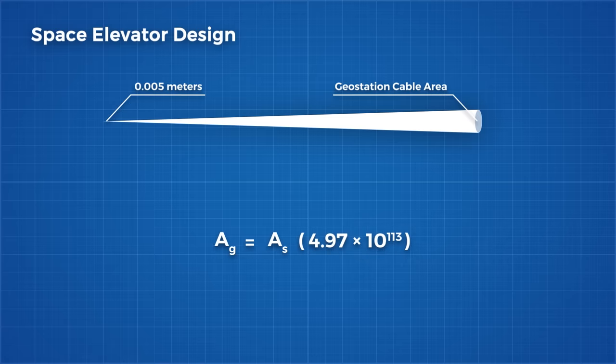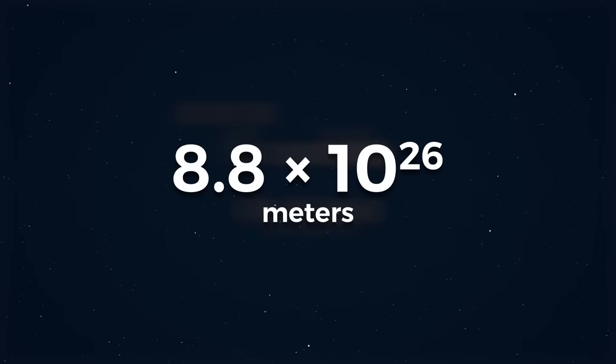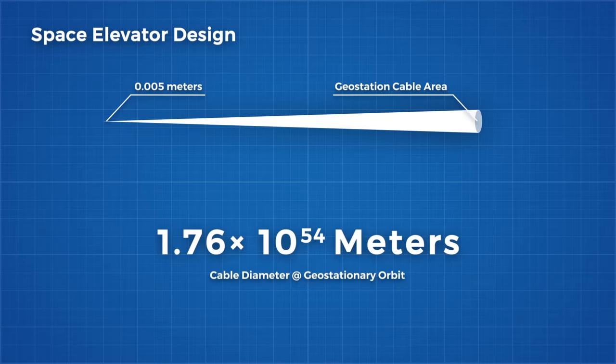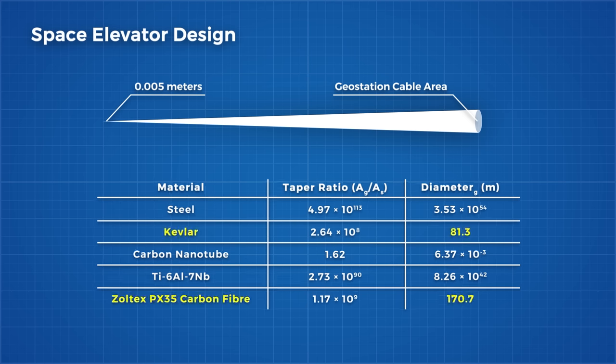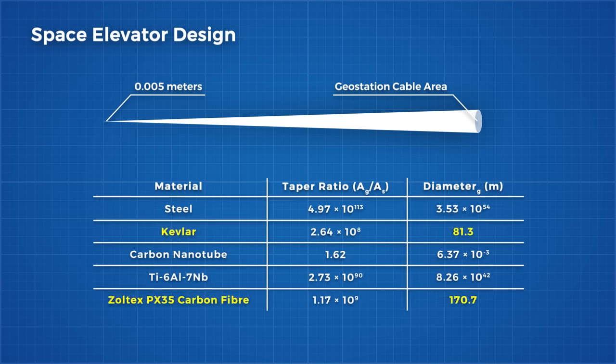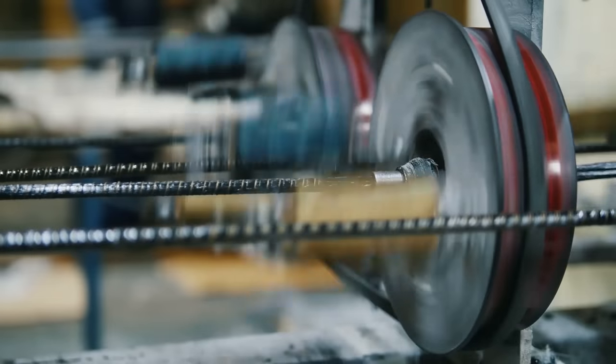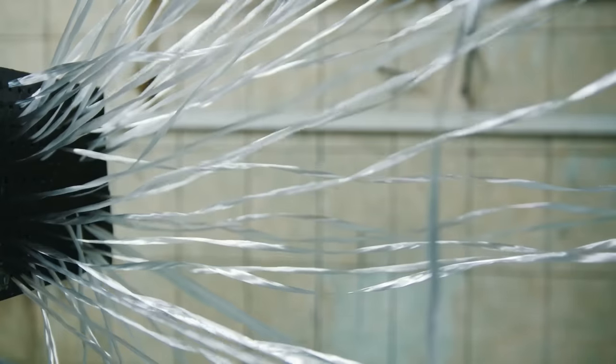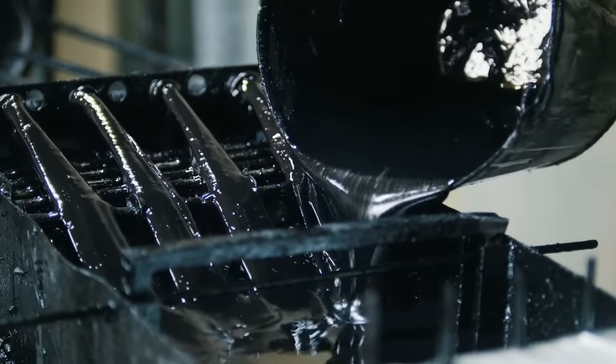I'm going to assume a circular area 5mm in diameter at the base. By multiplying the cross sectional area at the bottom by the taper ratio, we find the cables widest point. For steel, this taper ratio is so huge that our cable, at its widest point, will be this number, whatever that is. For reference, the width of the known universe is 8.8 by 10 to the power of 26 metres wide. Even dividing the diameter of this cable by the width of the known universe yields this number, which I still can't comprehend. Titanium is marginally better. Now Kevlar and carbon fibre are looking a lot better. They will have a circular diameter of 80 metres and 170 metres respectively, still not quite feasible.